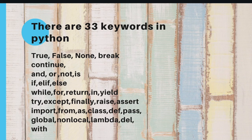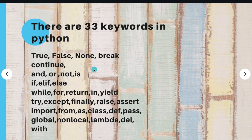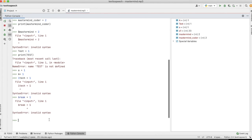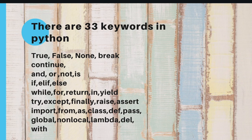Let me show a scenario where you can't use a reserve word as an identifier. Suppose I try to use 'break' as a variable — 'break = 1'. You can see it is showing an error. So we cannot use reserve words as identifiers in Python.